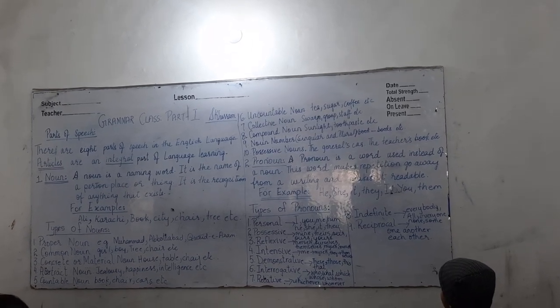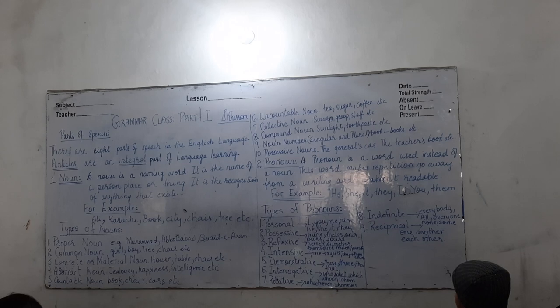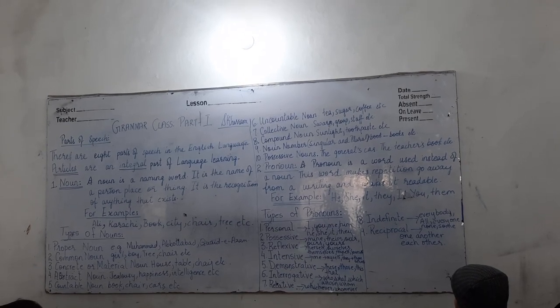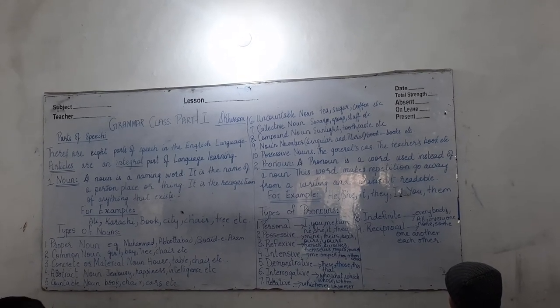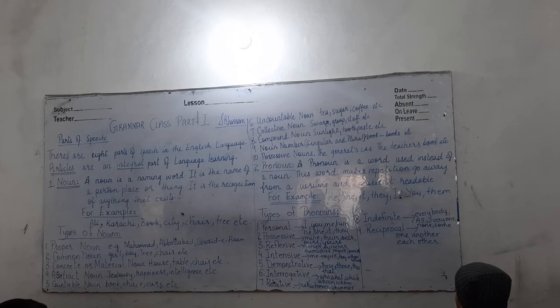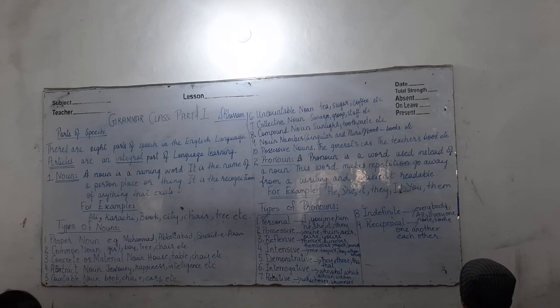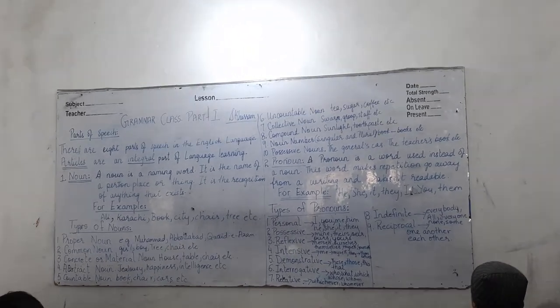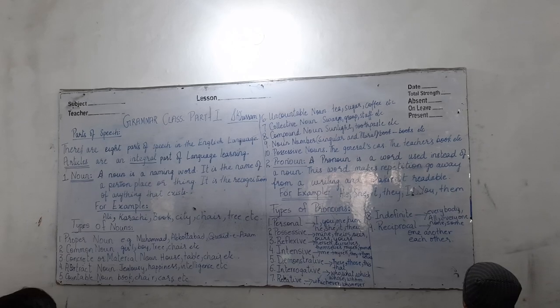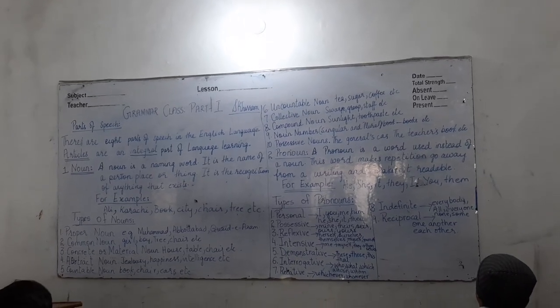Number five is countable noun — all the things that you can count: book, chair, cars, pencils, etc. Next is uncountable noun — these are nouns that you cannot count. For example, tea: you need a container to count tea cups or teapots. Sugar — again, you need a container for it, in bags or cages of sugar, etc.